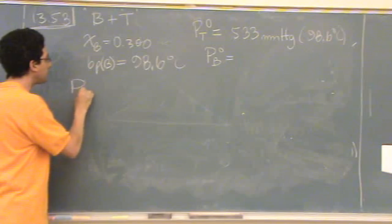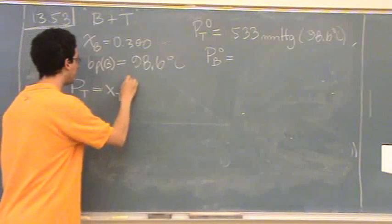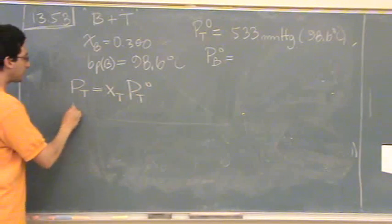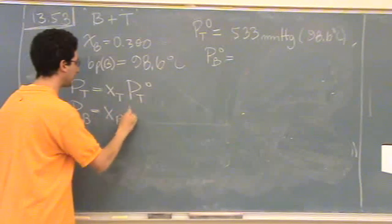We've got Pt equals Xt times Pt naught. We'll just write down the formula. Let's kind of see what we have so far. Maybe it'll help us figure out what we need.